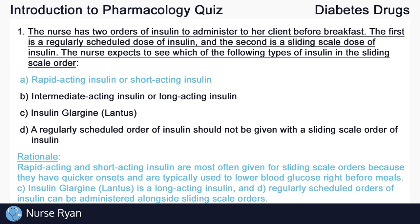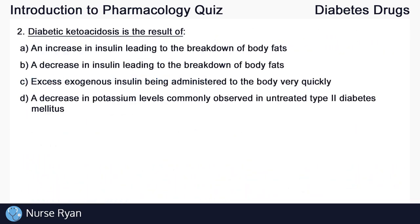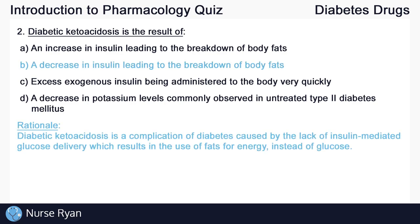Insulin glargine, or Lantus, is a long acting insulin. Regularly scheduled orders of insulin can be administered alongside sliding scale orders. Question number two: diabetic ketoacidosis is the result of a decrease in insulin leading to the breakdown of body fats. Diabetic ketoacidosis is a complication of diabetes caused by the lack of insulin-mediated glucose delivery, which results in the use of fats for energy instead of glucose.